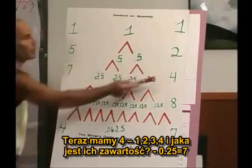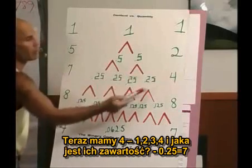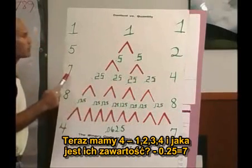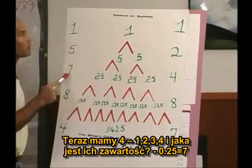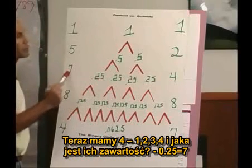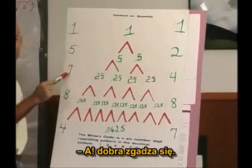Now we have 4 — 1, 2, 3, 4. And what's their content? 0.25, which equals a 7.